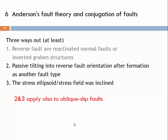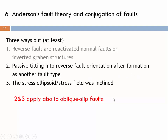Oblique slip faults can also be explained by these latter two mechanisms. Either they formed as dip-slip or strike-slip faults and were later passively rotated, or the stress ellipsoid was not in the standard Anderson orientation. As soon as no principal stress vector is vertical, oblique slip faults automatically form.